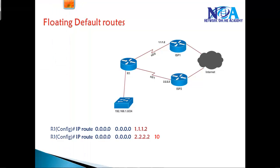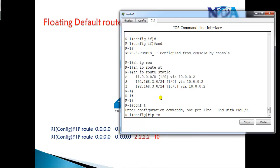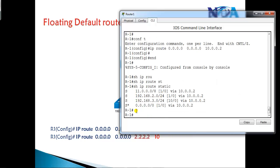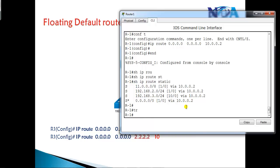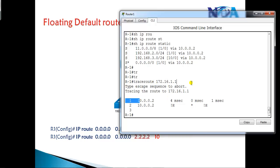If you want to verify this in the command line, I can configure 'ip route 0.0.0.0 0.0.0.0 [next-hop]'. I don't have a real ISP connection here, so I'm using 10.0.0.2 as the next hop. Once we add this, if I give 'show ip route static', I'll see it installed as 'S*' in the routing table. If a user in the LAN tries to ping 172.16.0.0 network — which is not present — the packet will go to Router 2 and then drop, since I don't have a real 172.16.0.0 network. But any unknown packets are sent to the next router, which in a real scenario would be the ISP router.